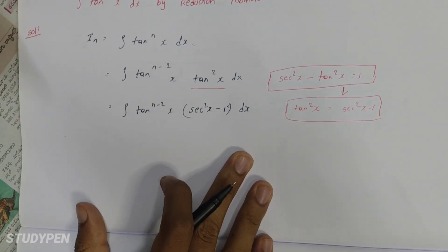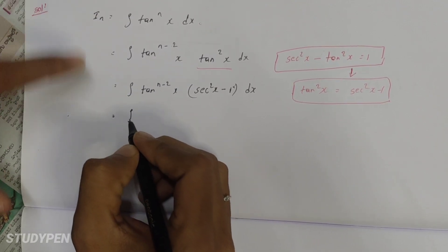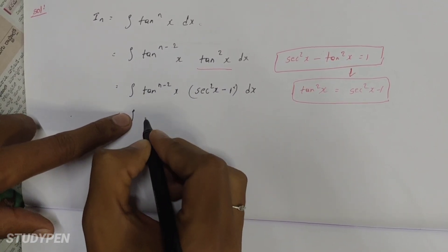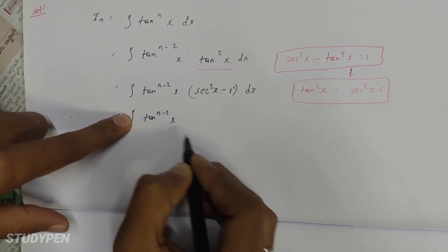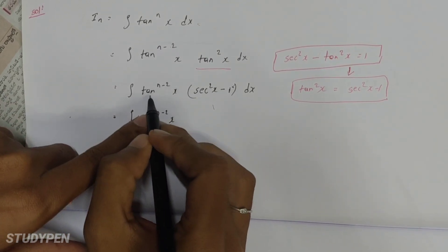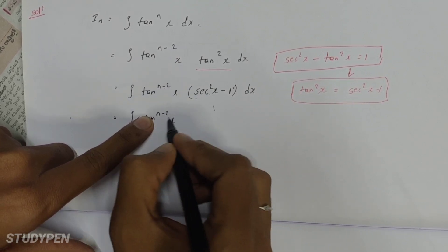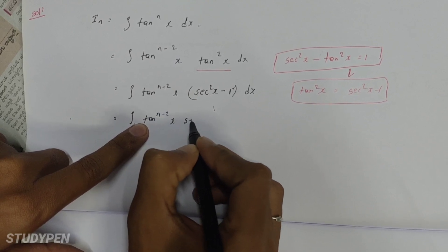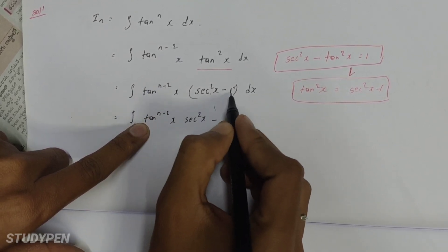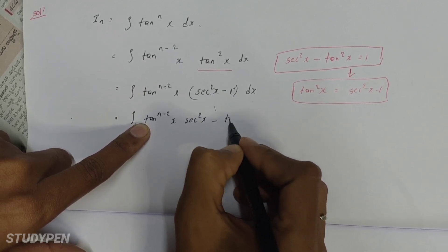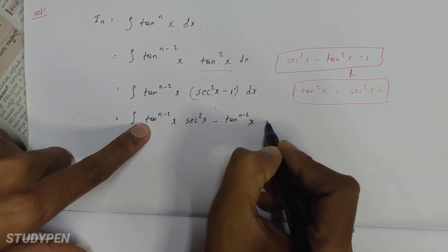Okay, we can write the next steps. So in this case, we can write very easy steps. We write tan n-2x multiplied by sec square x. Then tan n-2x is equal to sec square x. So tan n-2x multiplied by sec square x minus 1 gives us the two terms: tan n-2x · sec square x dx minus integral tan n-2x dx.